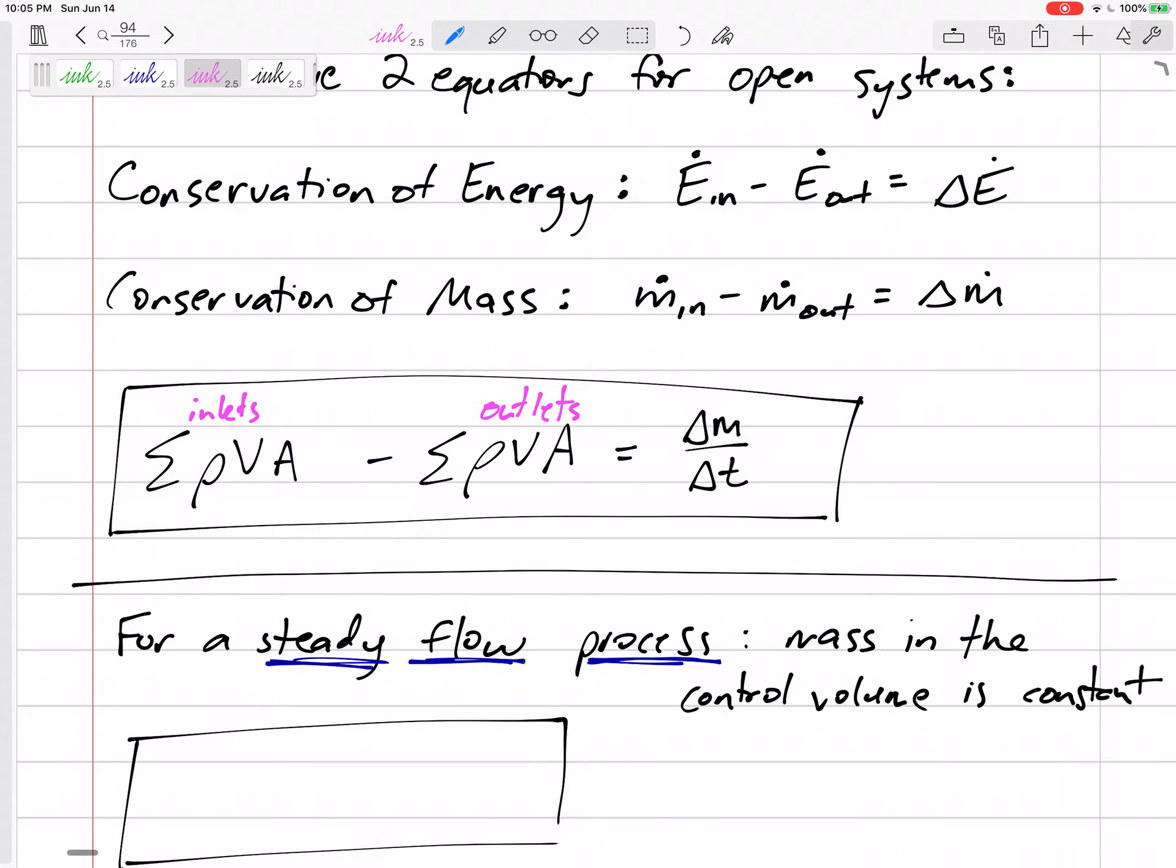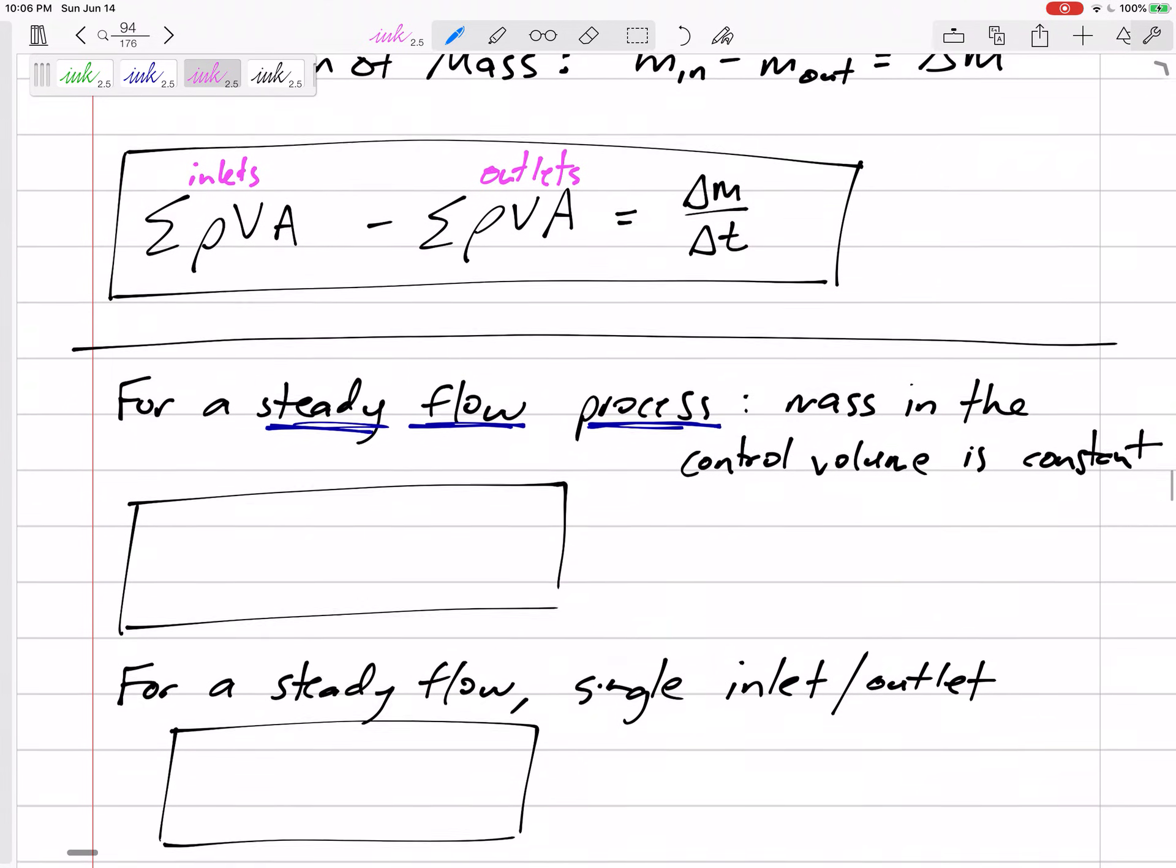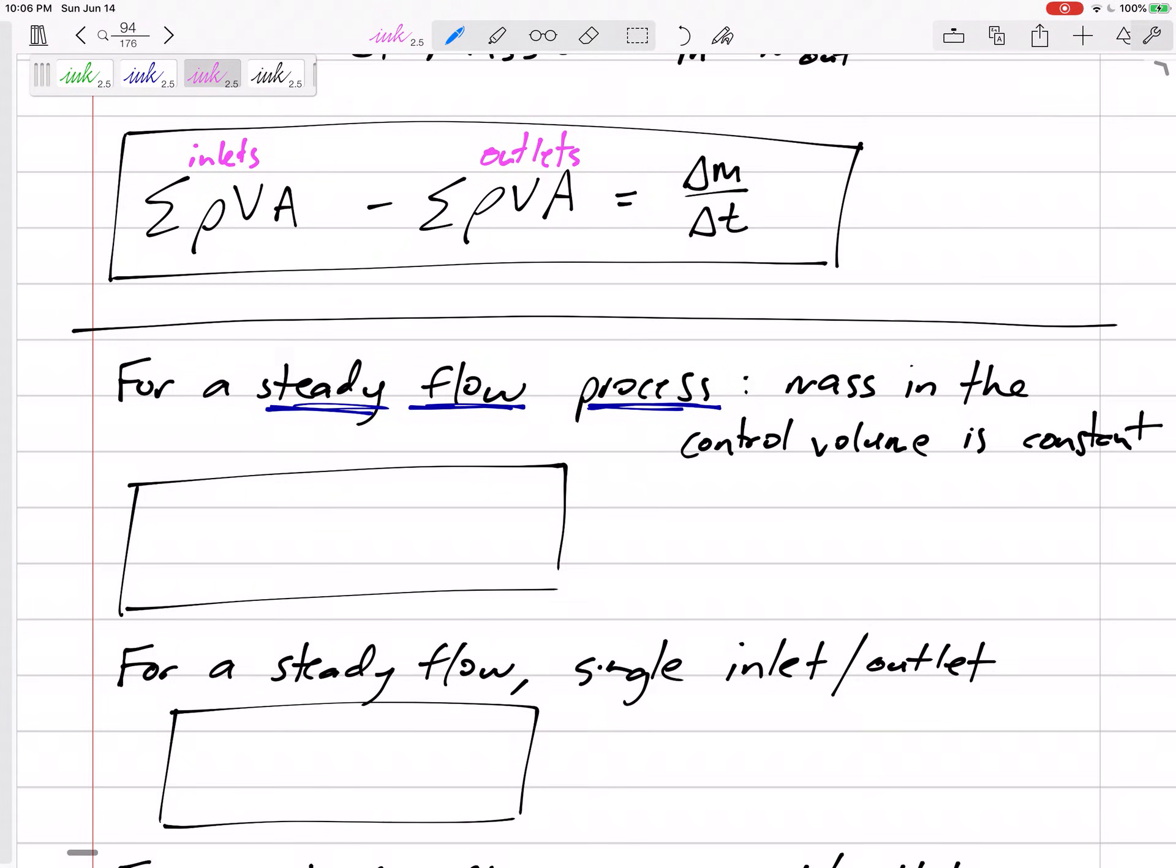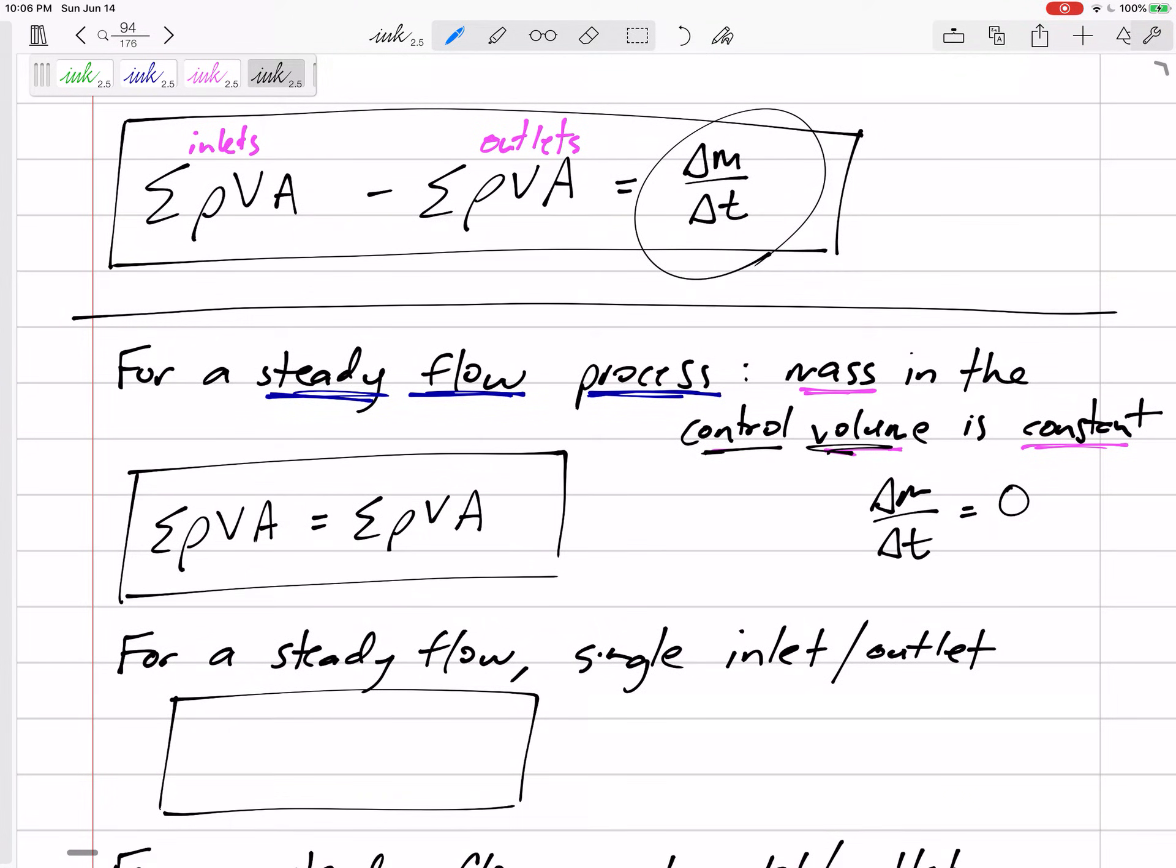So for steady flow processes. So first we're going to look at a special type of process and that's a steady flow process. Steady flow, meaning the mass in the control volume is constant. So it's not filling up with mass. Sometimes I think of inlets like a hose that's filling up a bucket. That would not be a steady flow process. Steady flow processes are not collecting more mass. Whatever mass it started with, that's the mass that it ended with. If the mass is constant in the control volume, then that right hand side of our equation, delta m dt or dm dt is zero. So it's really just showing me that all the inlets equals all the outlets.